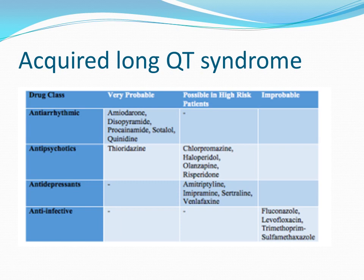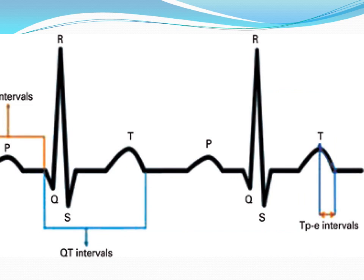These drugs block potassium channels in the heart, which regulate repolarisation and prolong the QT interval. Interestingly, not all drugs that slow repolarisation are arrhythmogenic. Sevoflurane is an example of a drug that prolongs QT but is not torsadogenic. It is not the prolonged QT itself that predisposes to ventricular arrhythmias, but a prolonged TpE — the time from the peak of the T-wave to the end. Only drugs that prolong TpE cause Torsades de Pointes.